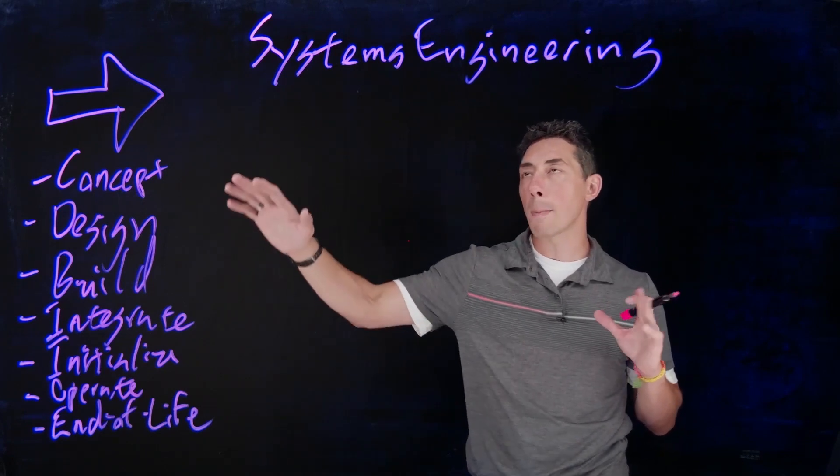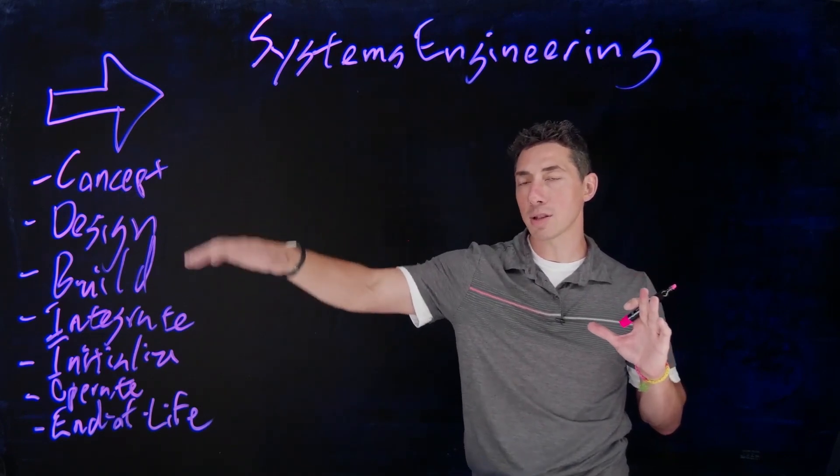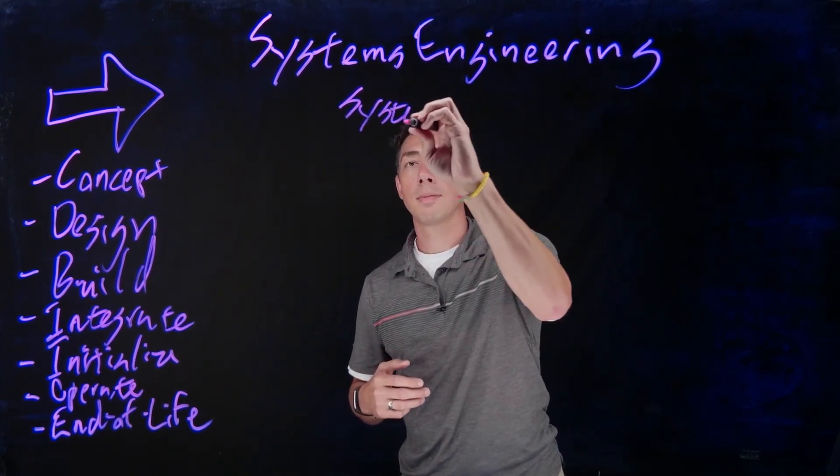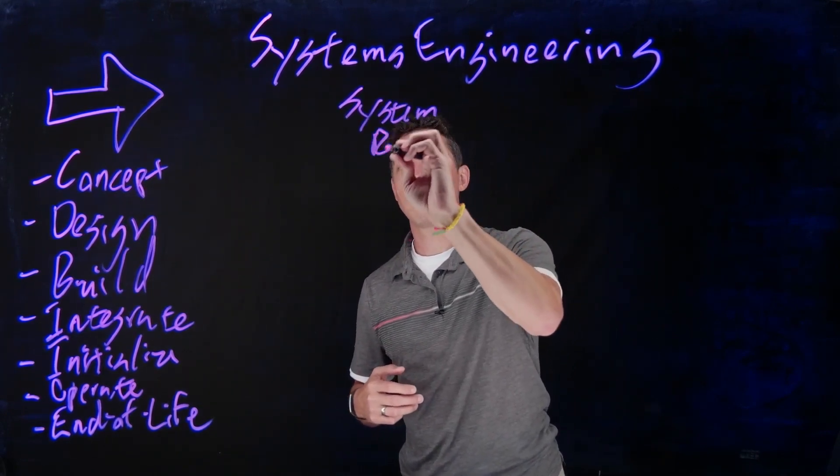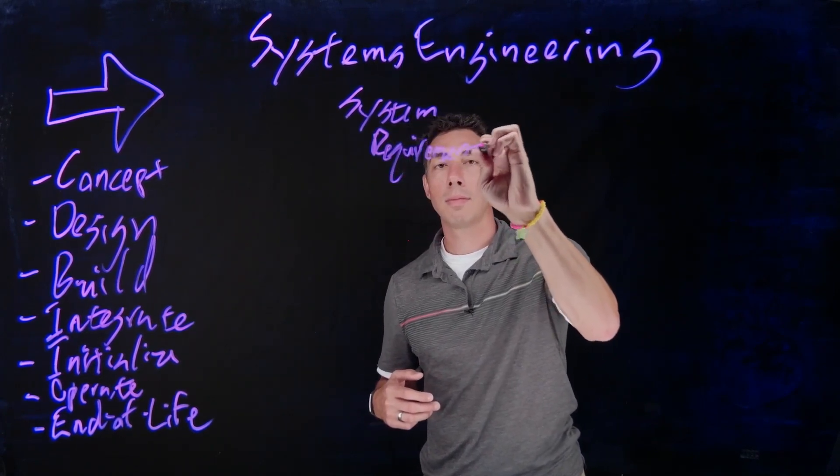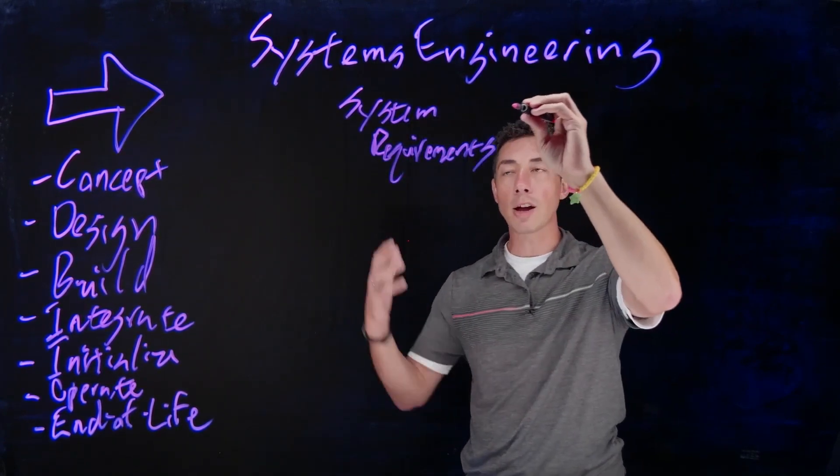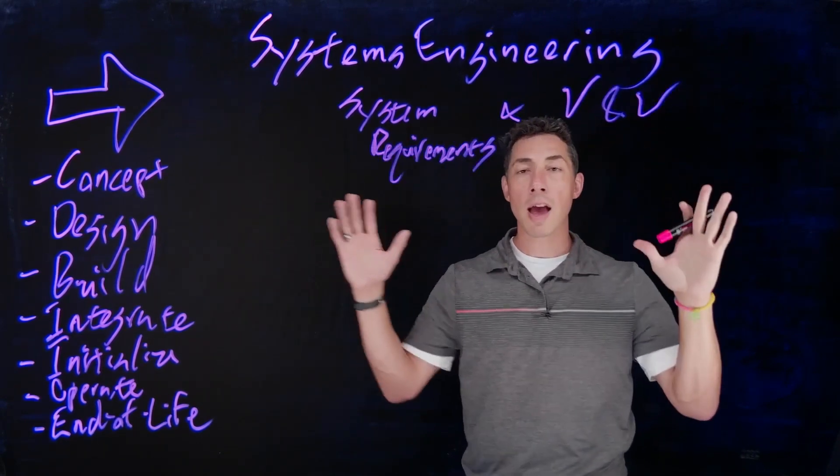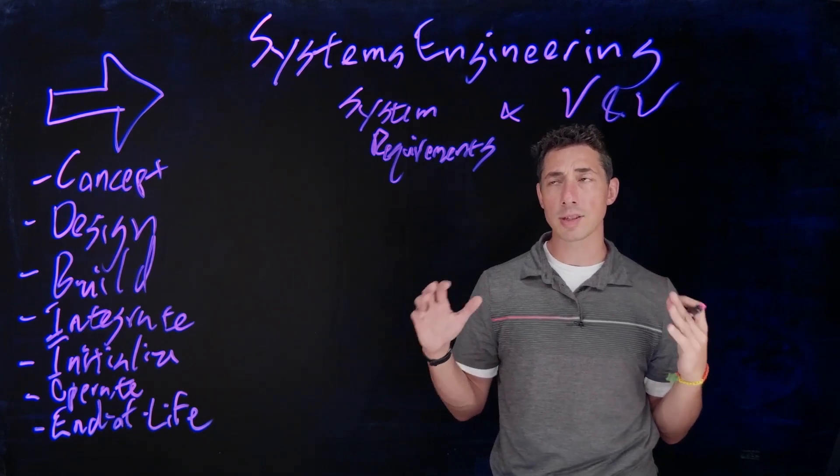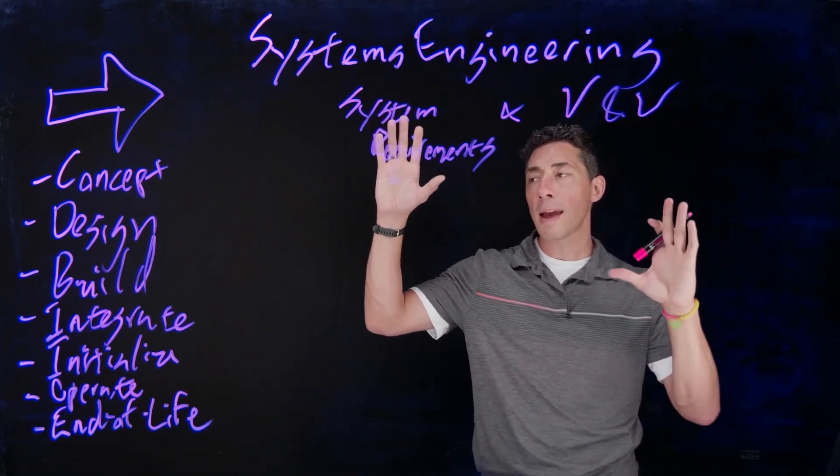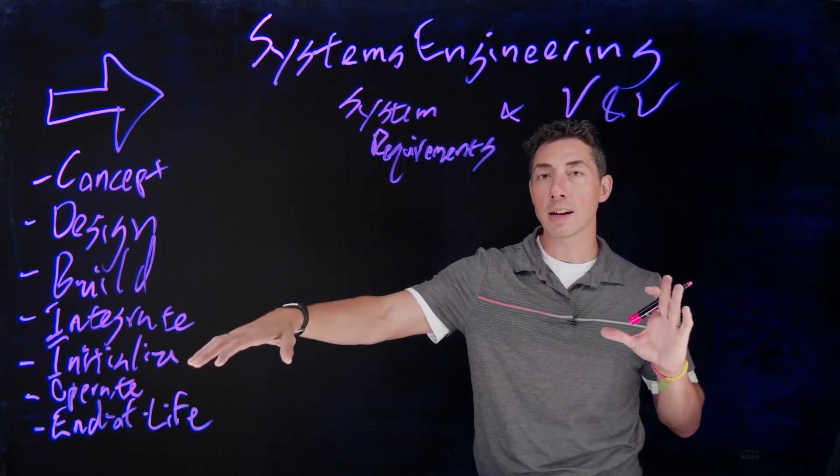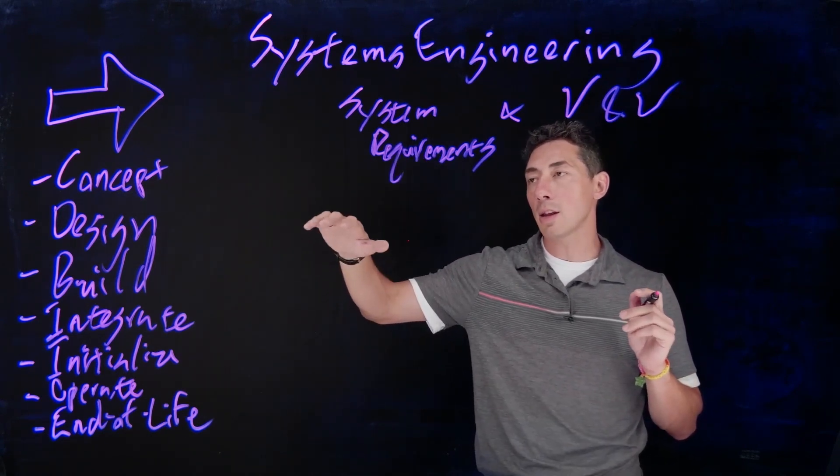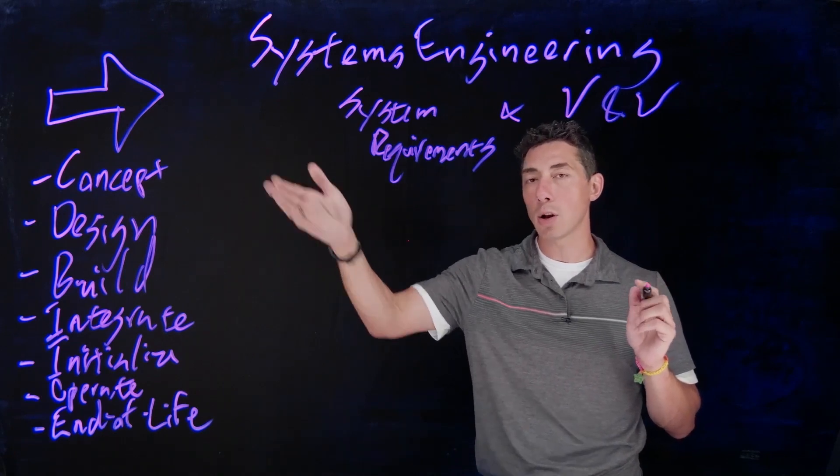And a system engineer is going to manage all of these life cycle transitions through two things. You've got your system requirements over here, and you've got your validation and verification over here. And those are the two primary tools of a systems engineer. You're going to manage all of these different transitions using these system requirements and the validation and verification of them. And the way you're going to do that is through what's called the system V.